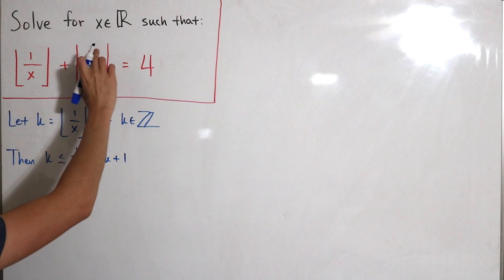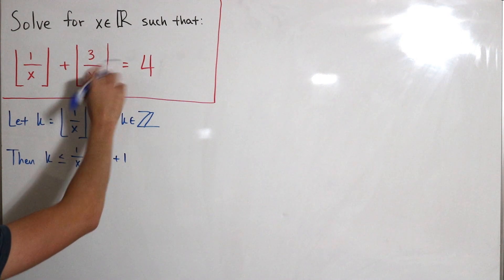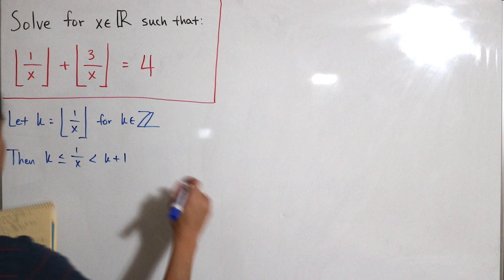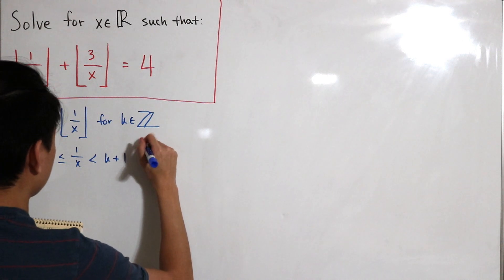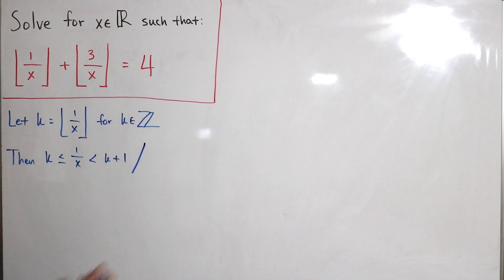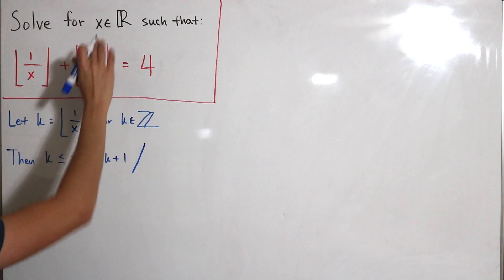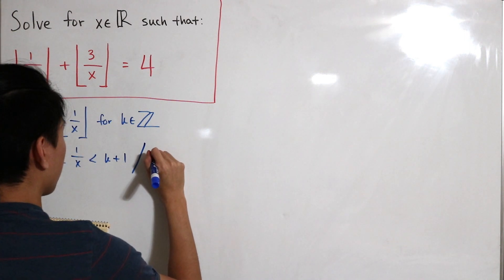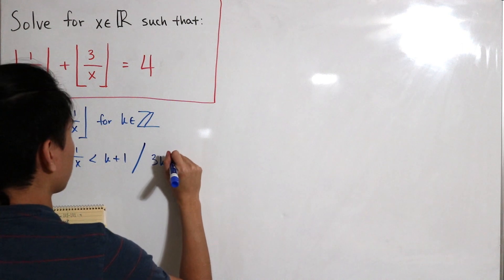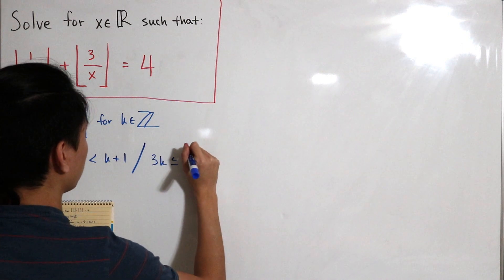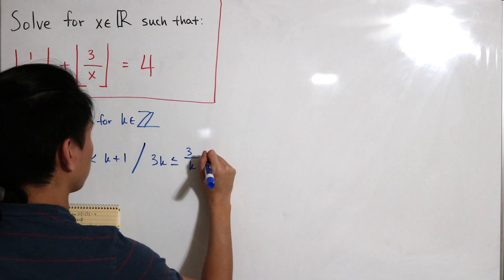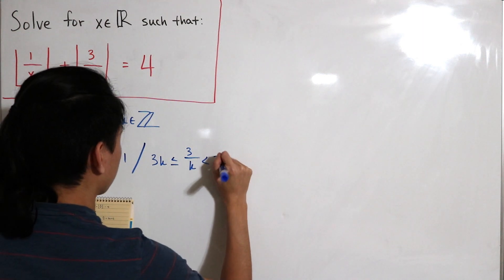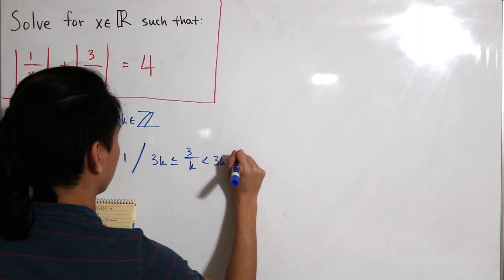We also need to handle the floor of 3 over x. Setting that aside, we multiply the inequality by 3, giving us 3k less than or equal to 3 over x, strictly less than 3k plus 3.